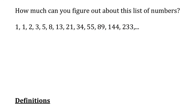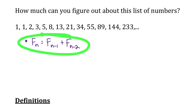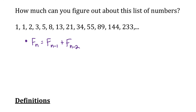And we can continue that sequence indefinitely. I could summarize that pattern by saying the nth Fibonacci number is equal to Fibonacci number n minus 1 plus Fibonacci number n minus 2. This is what's called a recursive sequence, but you don't have to worry about this notation yet. I'll teach you throughout the unit the notations we can use to describe sequences of numbers.